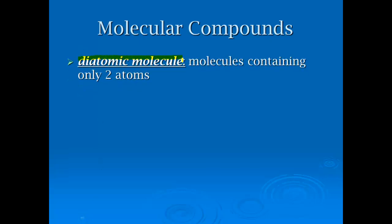A diatomic molecule is a special type of molecule — it contains only two atoms. The prefix 'di' indicates two, so a diatomic molecule contains only two atoms.